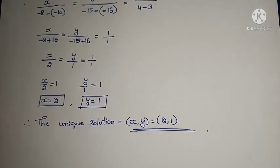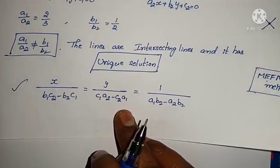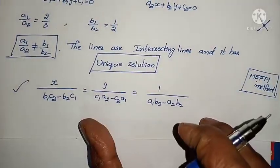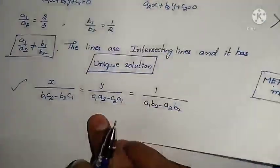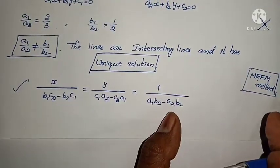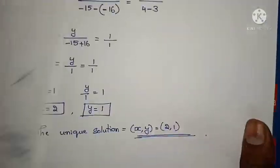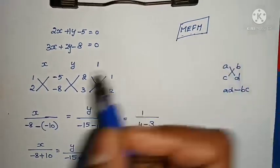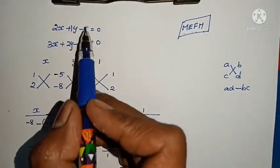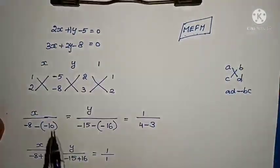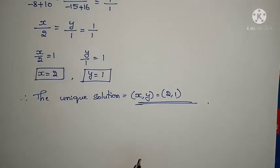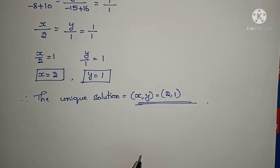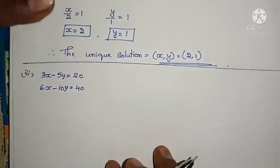Cross multiplication method — this is the correct formula. If you can remember it, remember it perfectly; if you make a small mistake, the whole problem will be wrong. For a shortcut, remember the MEFM method — middle, end, first, middle — and you can solve problems very easily. Let us go to the next problem.